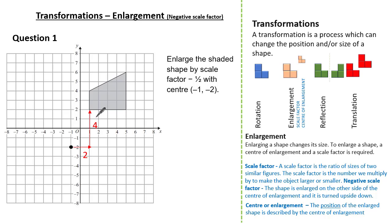Given our scale factor is negative a half, this means we need to do the opposite and halve those distances. So two to the right and four up now becomes one to the left and two down. This is our new vertex.